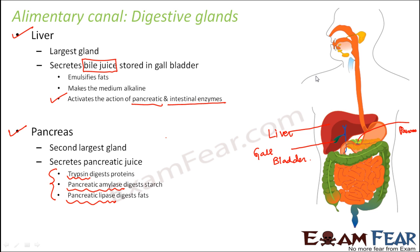All pancreatic enzymes and intestinal enzymes need an alkaline environment, which is provided by the bile juice. The liver is connected to the gallbladder, and the bile juice travels through a tube-like structure to reach the intestine. Similarly, the pancreas — the green colored structure behind the stomach — is also connected to the stomach and intestine. At the region where food passes from the stomach to the intestine, both the pancreatic enzymes and bile juice enter that area, exposing food particles to them. This makes the environment alkaline, activates the pancreatic enzymes, and digestion proceeds.